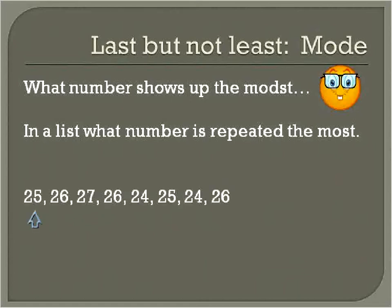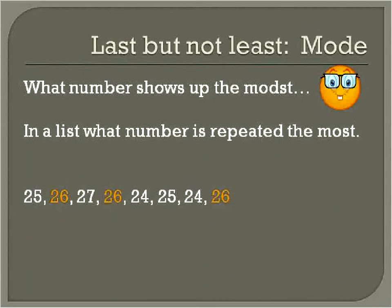Let's take a list: 25, 26, 27, 26, 24, 25, 24, 26. We need to find the number that appears the most. In this case, 25 is listed twice, 24 is listed twice, 27 is there just once — but 26 is listed three times. Therefore, 26 is the mode.